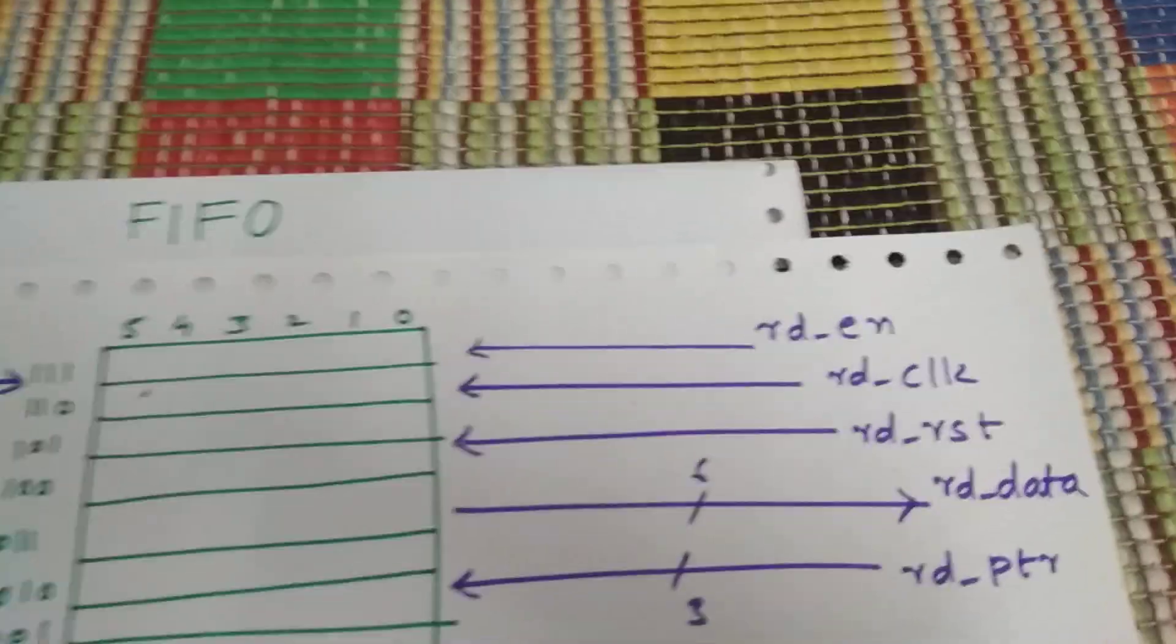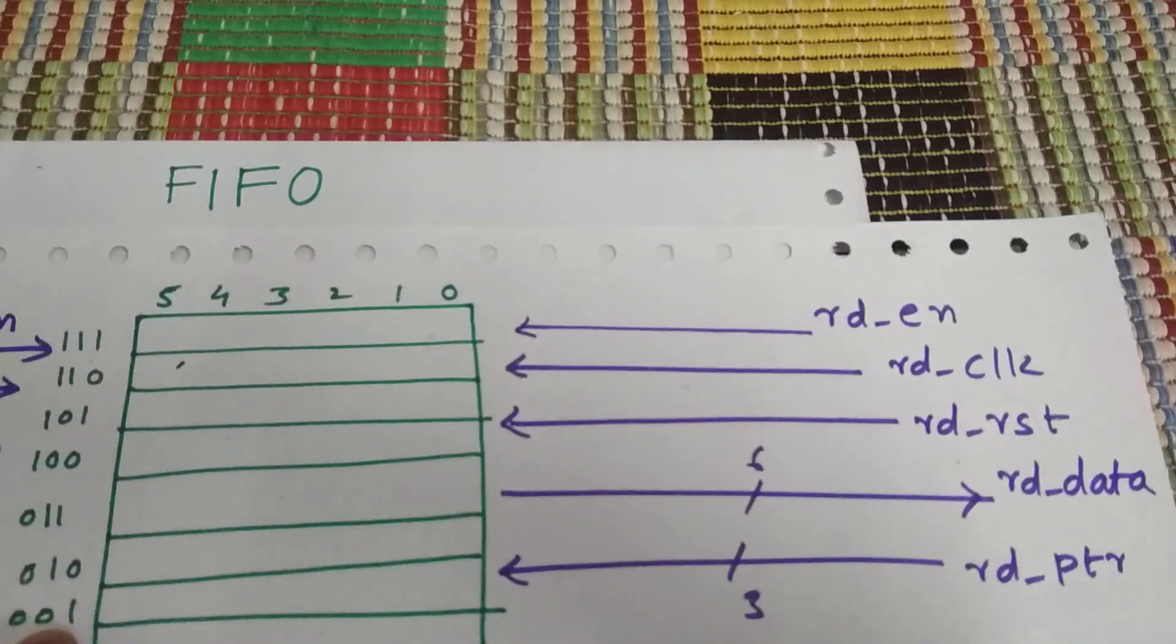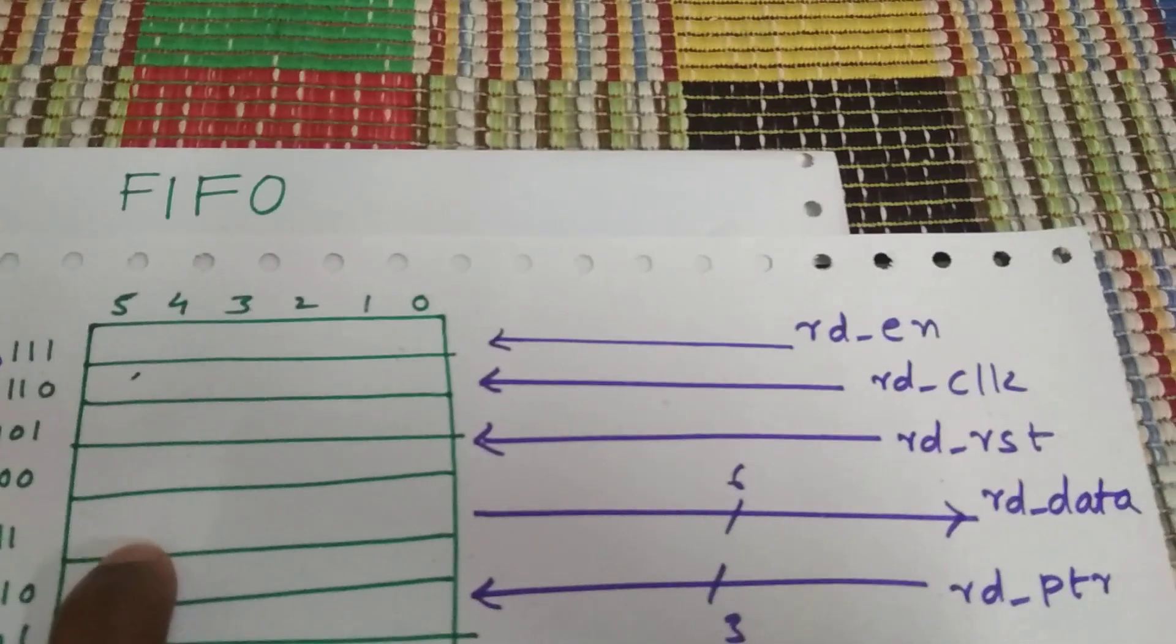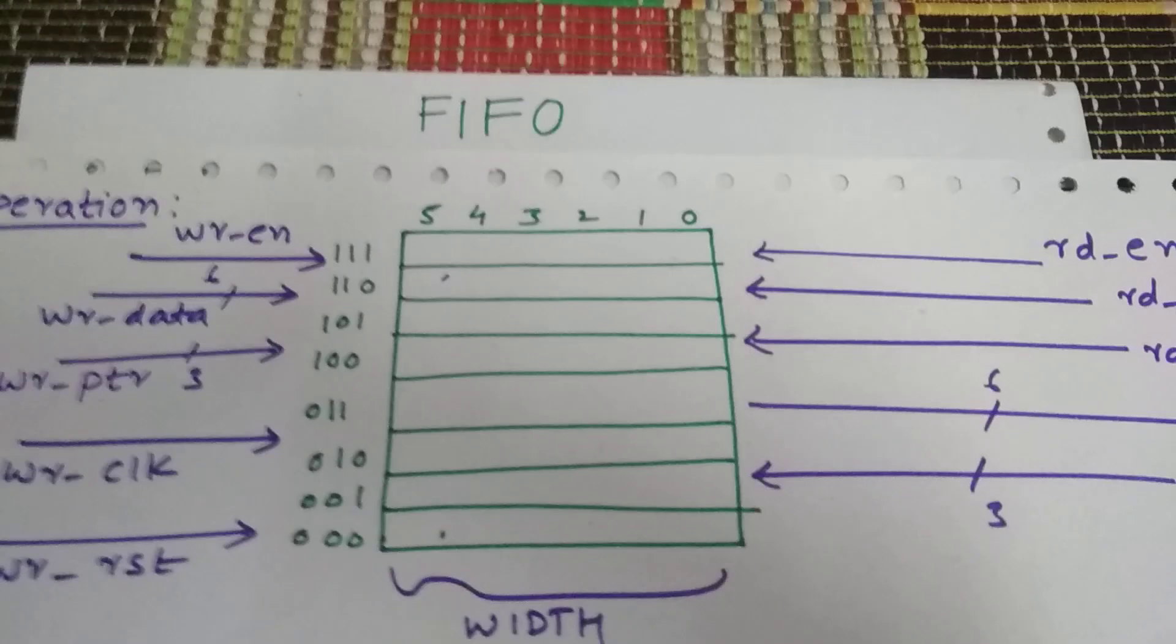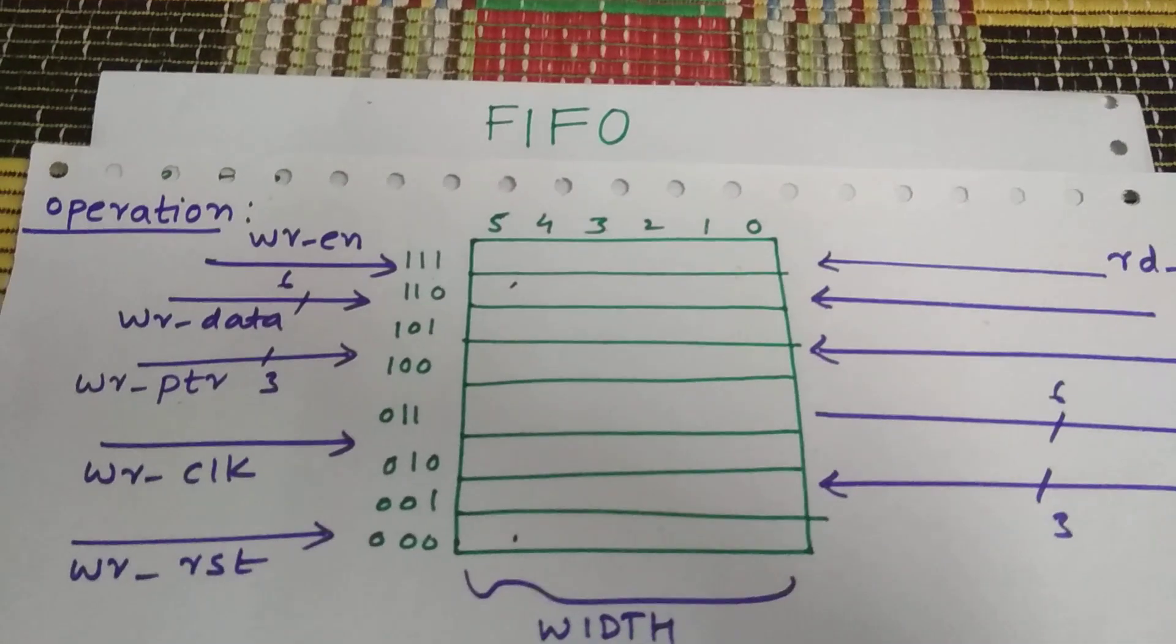If read pointer is pointing to 011, then the data will be read from 011. So this is the basic operation of a write and read from a FIFO.